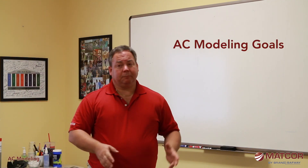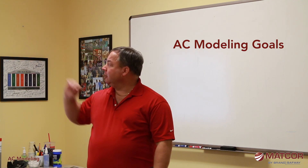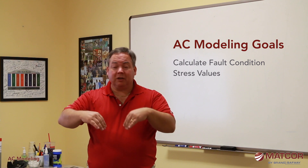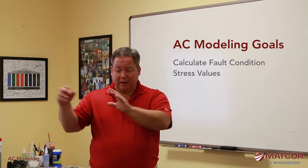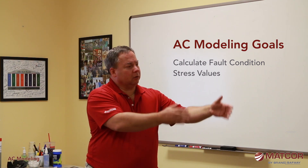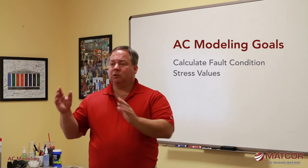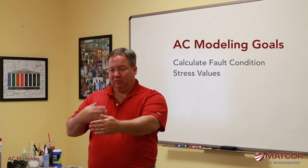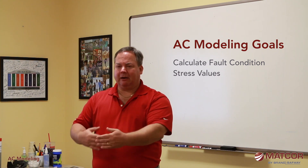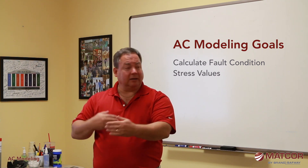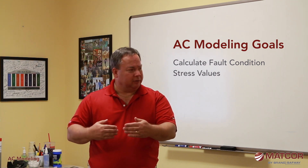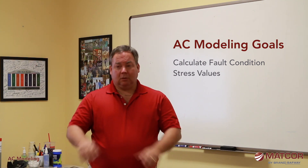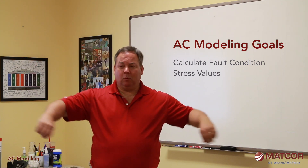The goals when you do AC modeling are straightforward: we want to calculate fault condition stress values. During a fault condition, we look at the worst-case fault at each individual tower and how that affects the pipeline — given the pipeline's relationship to that tower, how far away it is, how deep it is, and what the resistance is at that location. We literally model every tower along the length of the co-location.